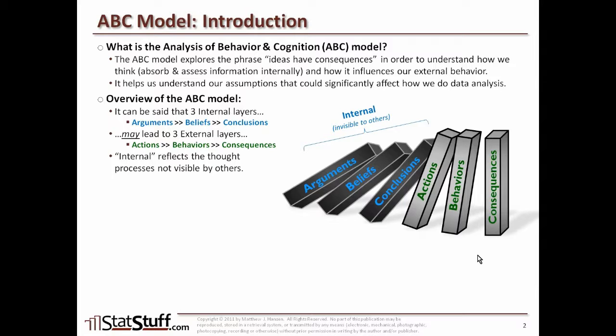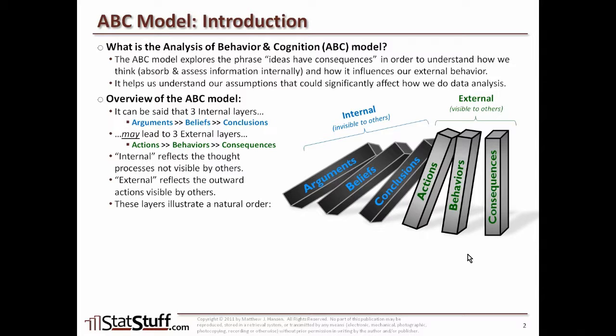When we say internal layers, we mean these are layers that affect our thought processes — not visible to others, internal to how we think. External refers to the things that other people can see: the outward actions or things that are visible externally.